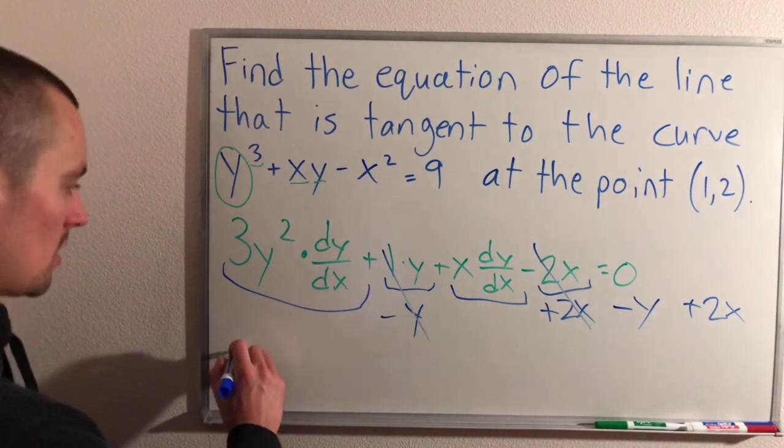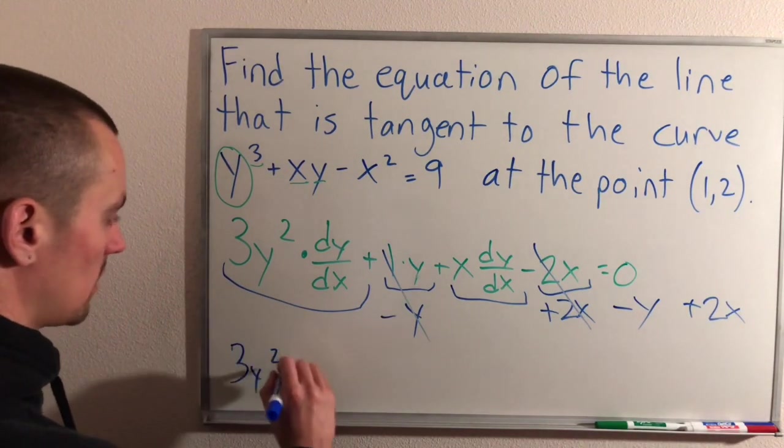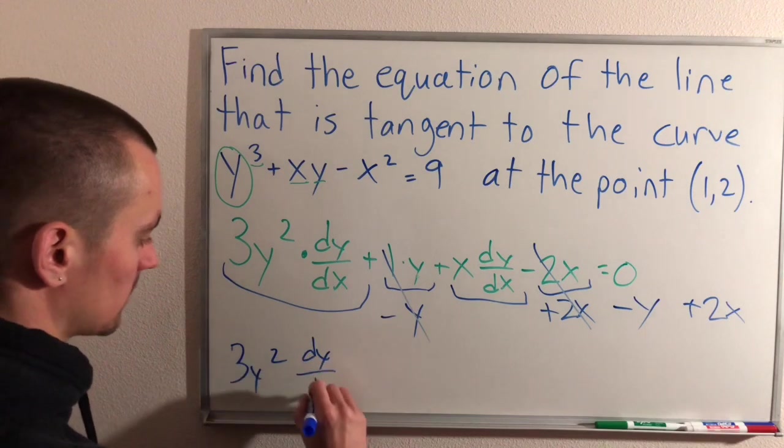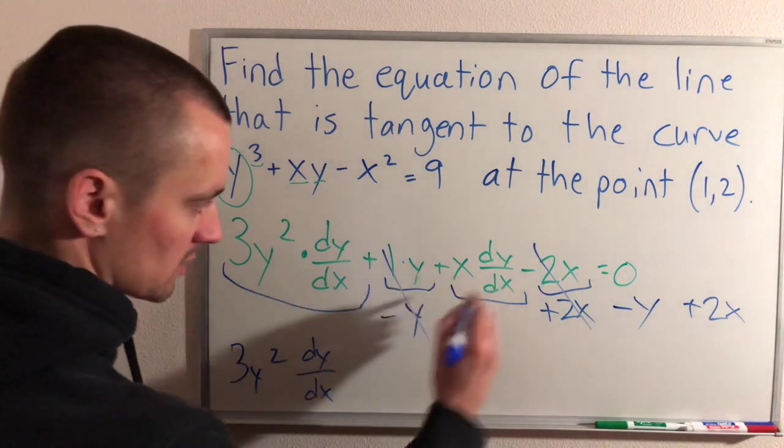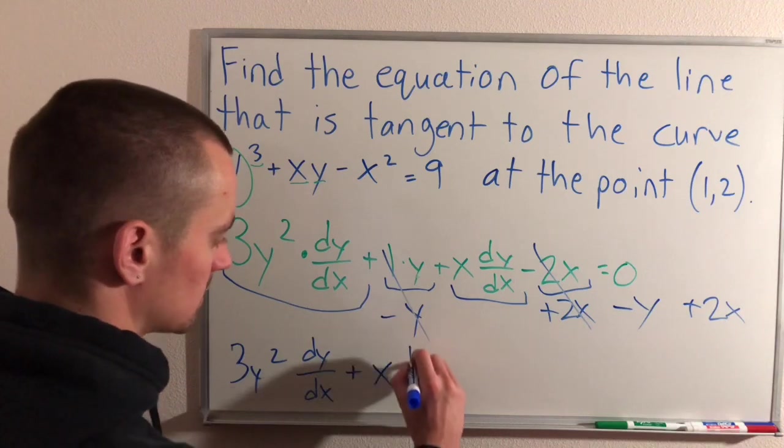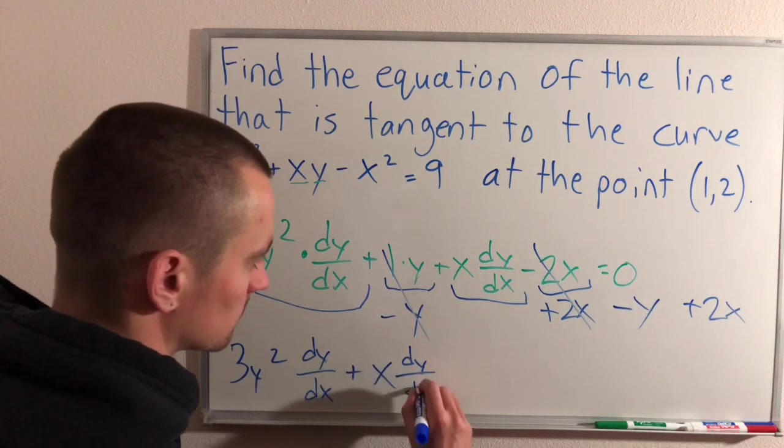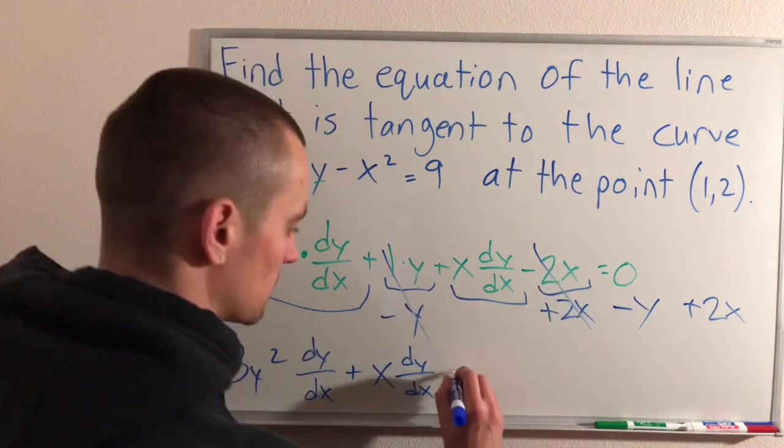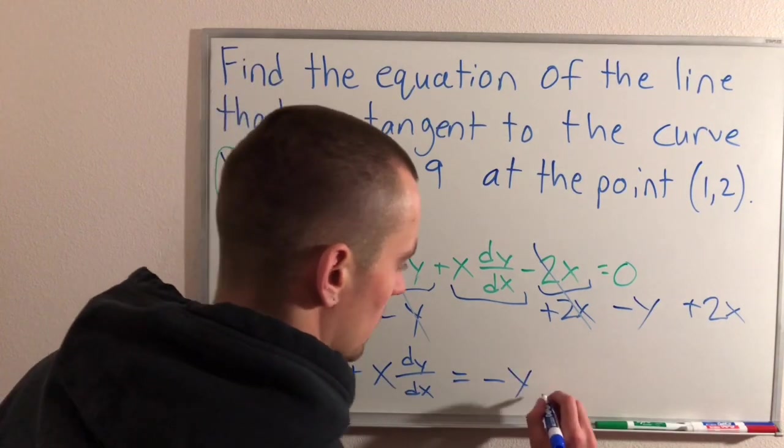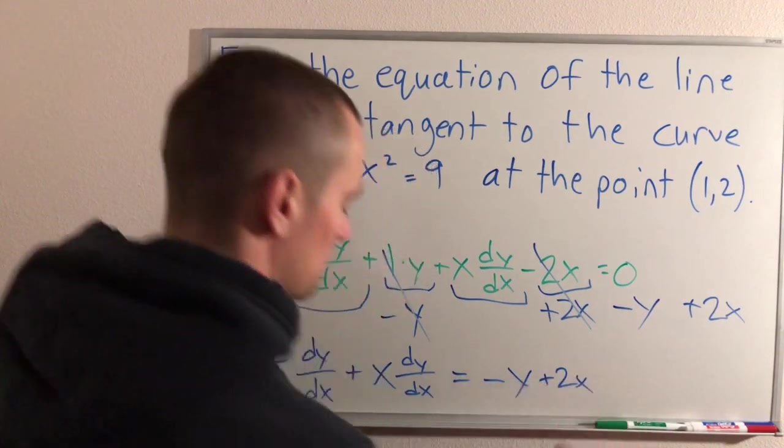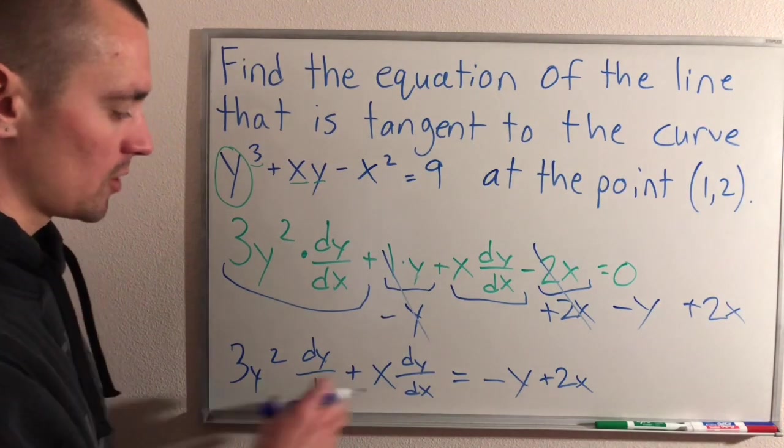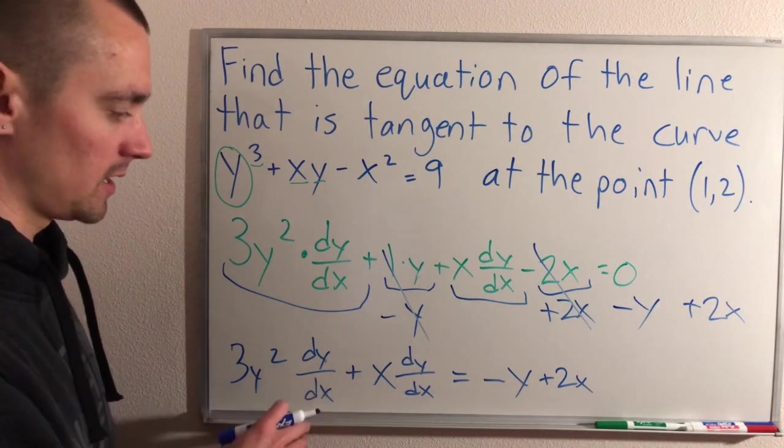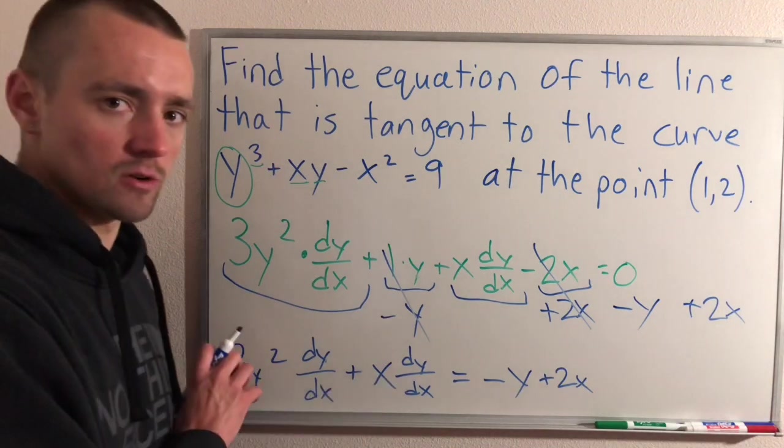So that leaves us with 3y² dy/dx. And then this term is gone. We just have plus x dy/dx. This term is gone. So then over here, we just have minus y plus 2x. Okay? So now both terms on the left side of our equation here, both have a dy/dx in them. So now we can factor out dy/dx.